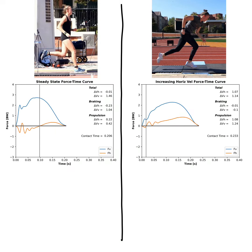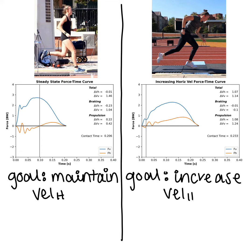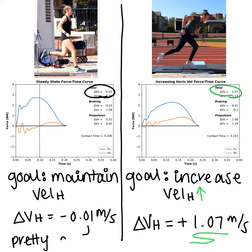On the left-hand side I was trying to maintain a steady-state velocity, and on the right-hand side I was trying to increase my horizontal velocity, which you can see is reflected in the change in horizontal velocity. On the right-hand side I was able to increase my velocity by 1.07 meters per second in this foot contact, whereas on the left-hand side I was basically able to stay at zero.